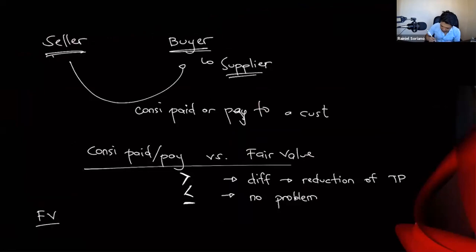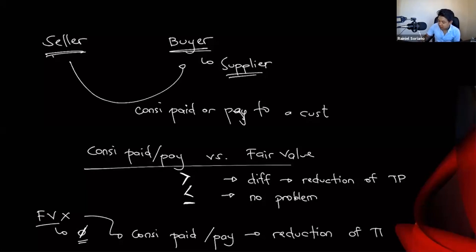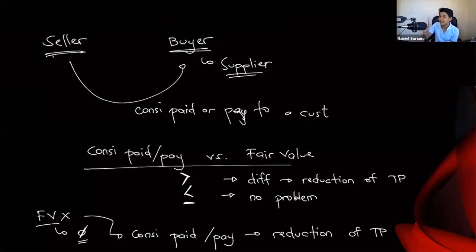If the fair value is higher than or equal to the consideration paid, there is no problem — nothing further needs to be done. If the fair value cannot be reasonably estimated, we assume the fair value is zero, meaning the entire amount of consideration paid or payable to the customer is treated as a reduction of the transaction price.